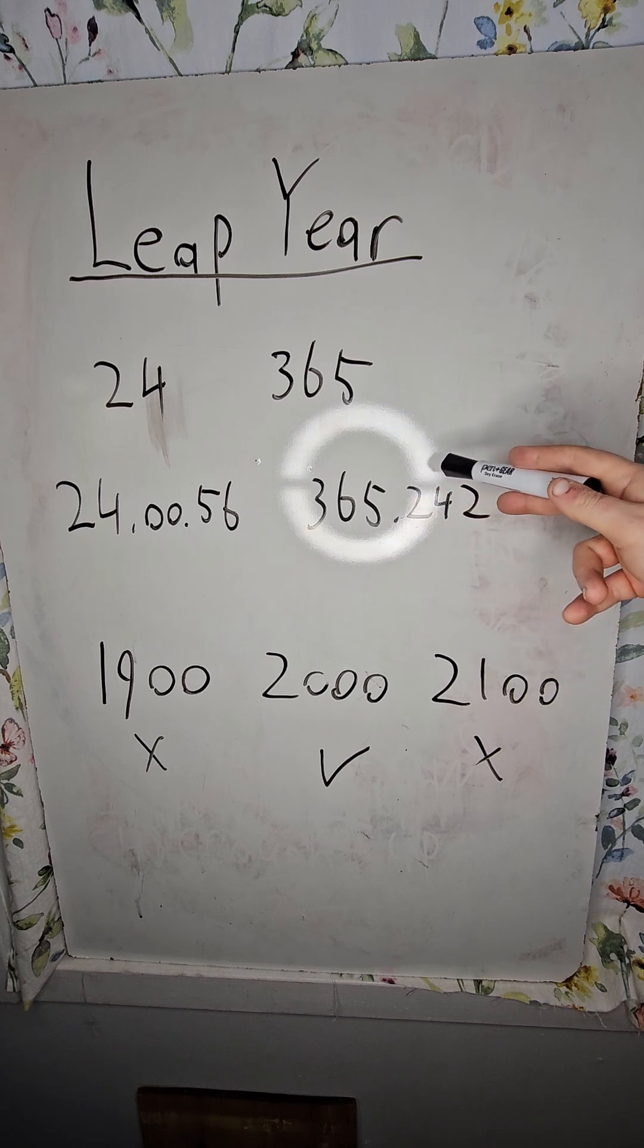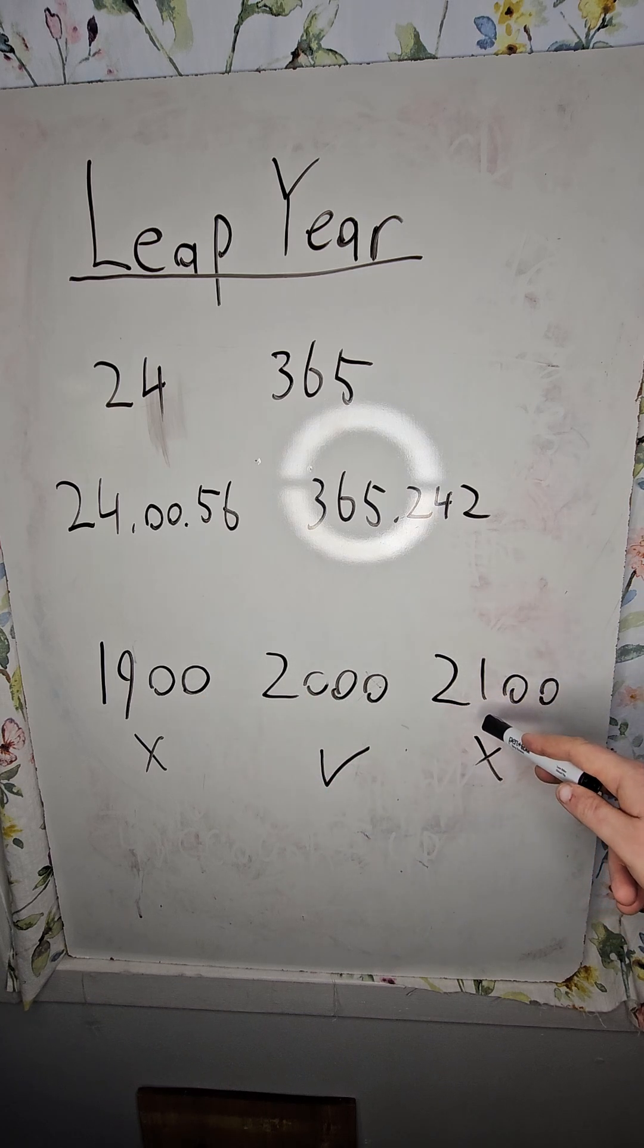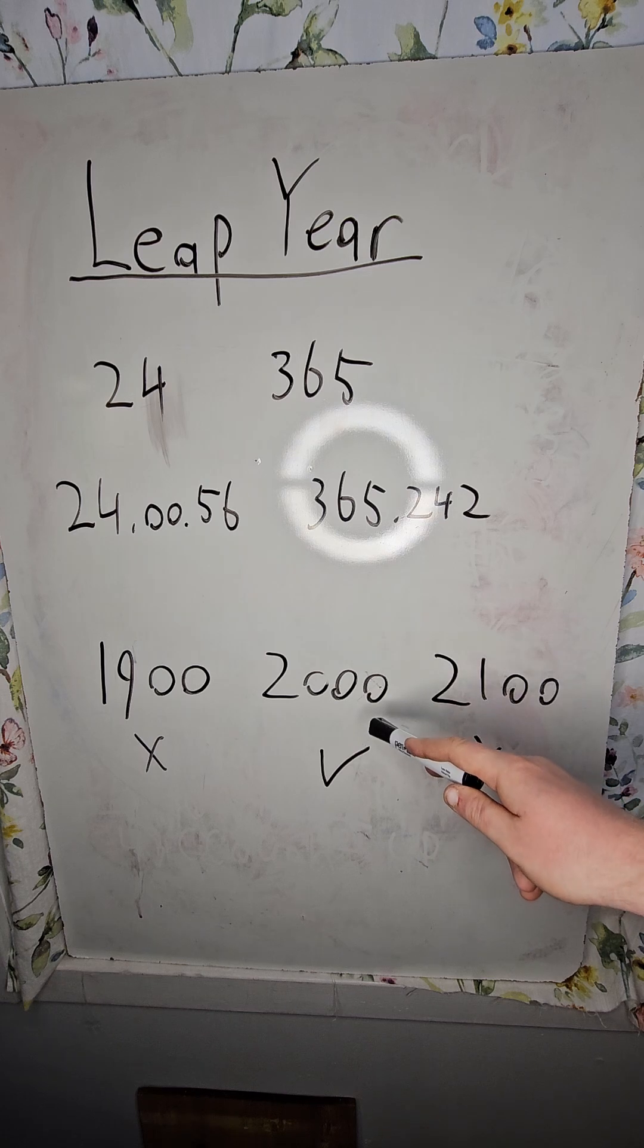Well, we use something else to compensate for that. Century years, like 1990 and 2100, won't have a leap year. It has to be divisible by 400 to have a leap year.